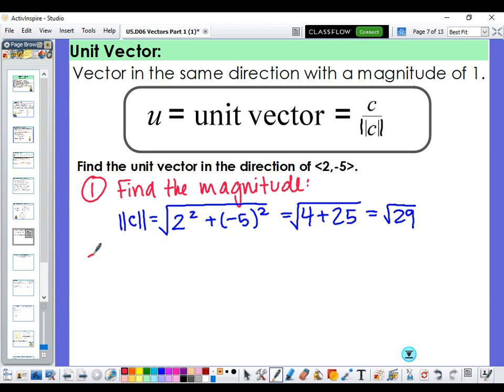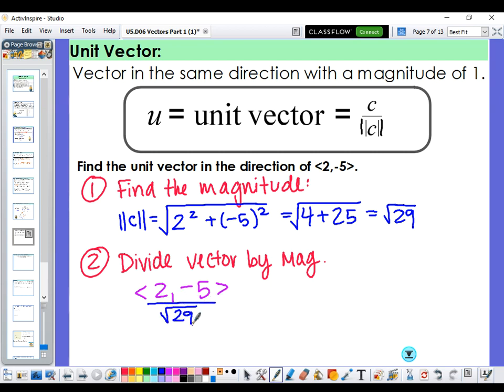Step two, we're going to divide the vector by its magnitude. So the vector that we just started with was <2, -5>. And we're going to divide that vector by its magnitude. Really, all this is, is a scalar multiple.